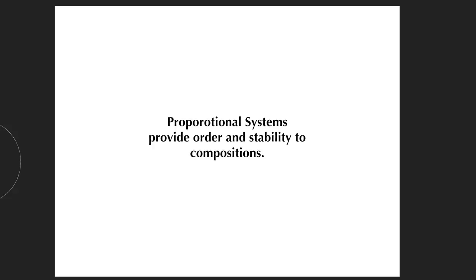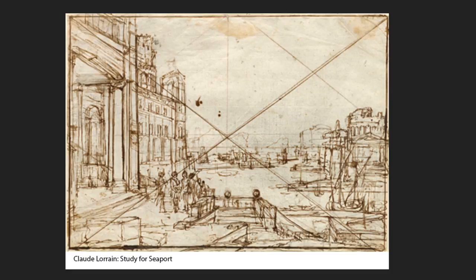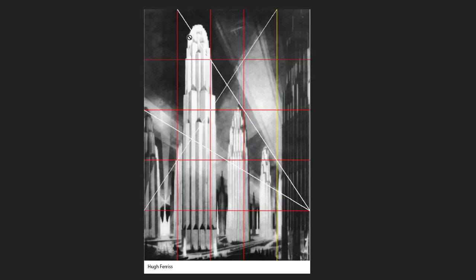Why are these so important? Because proportional systems provide order and stability to your compositions and everybody uses them. Let's look at one of the drawings of Claude Lorraine, a study for his seaport. You can see how Claude Lorraine is already using these rectangular armatures to subdivide his picture plane before he even starts to draw. Hugh Ferris uses a two-by-three proportional system in his drawing, which helps define the various areas and also determines the sight lines for his perspective points.